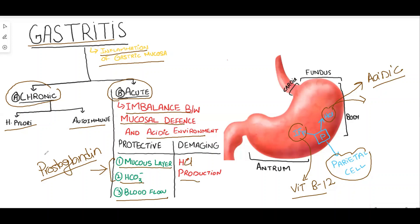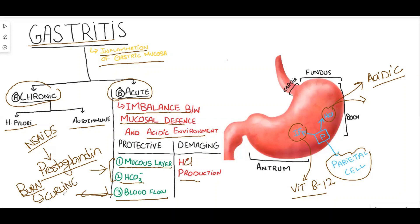Prostaglandins are impaired by decreased NSAID intake. NSAIDs are drugs used for pain relief. Decreased blood flow due to burns leads to curling ulcers of the stomach, and excessive HCl production occurs due to vagal stimulation.